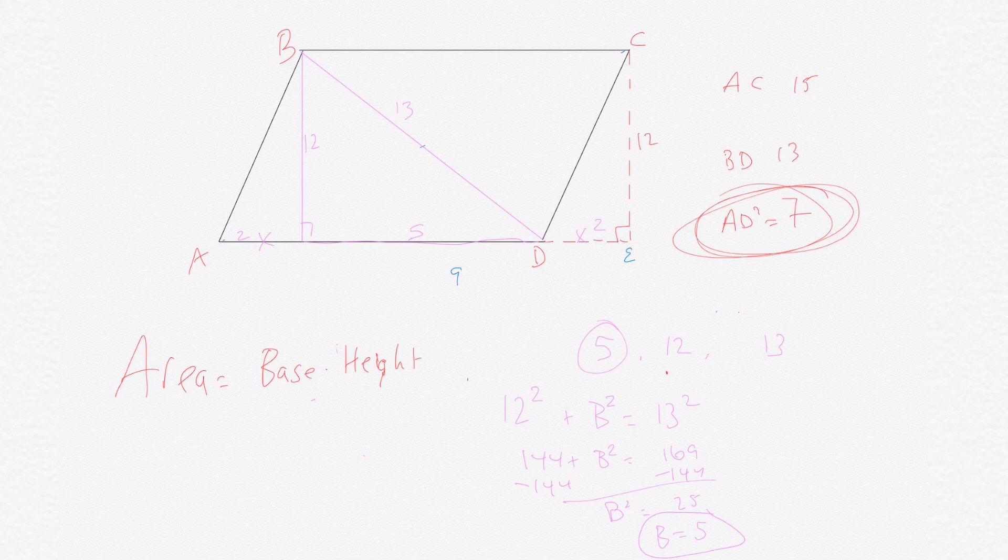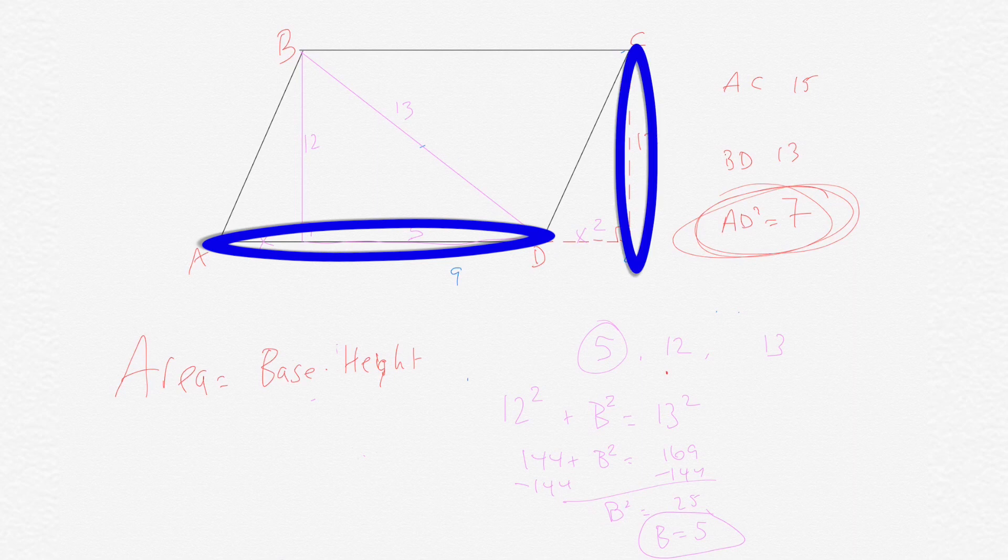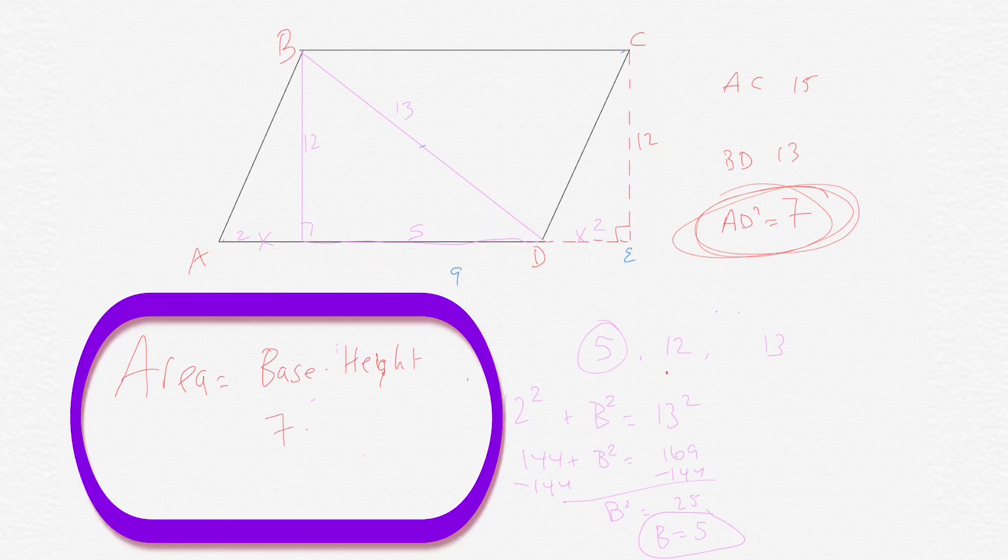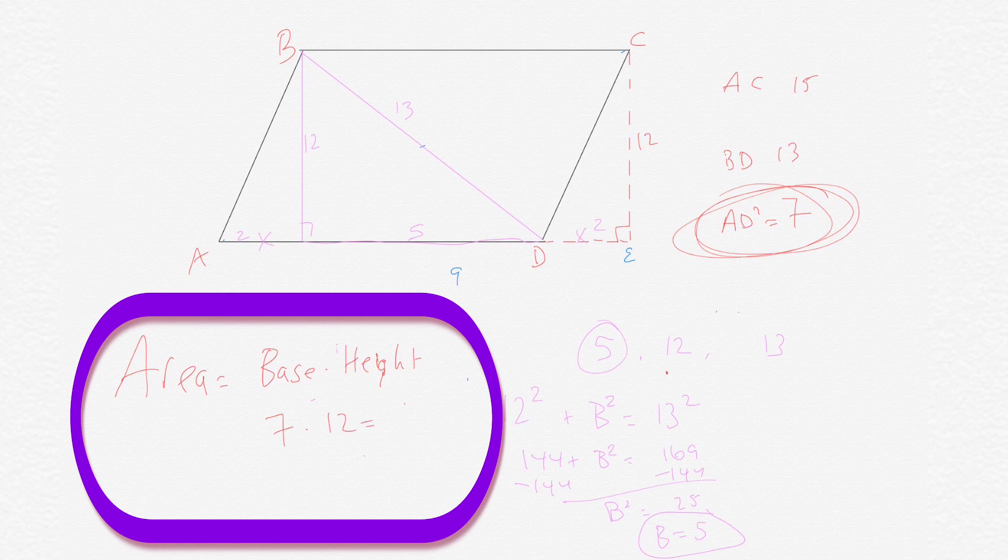So the base we calculated is 7. The height they gave us is 12. So we simply multiply 7 times 12 to get the area of the parallelogram. 7 times 12 is 84. That is the area of the parallelogram.